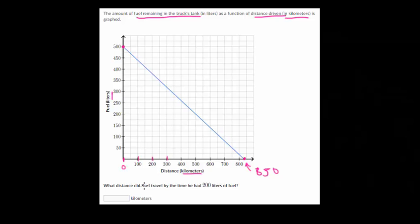So what distance did Carl travel by the time he had 200 liters of fuel? So our key information here is this 200 liters of fuel. So we're going to go to our vertical axis, because that deals with fuel. We go up to 200.